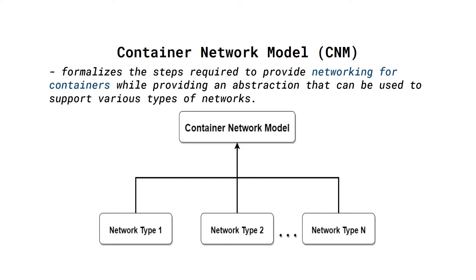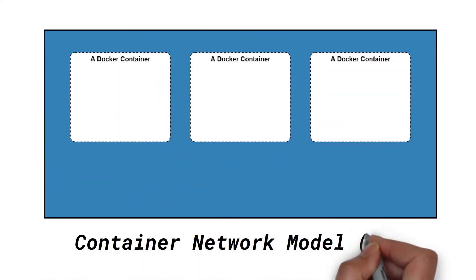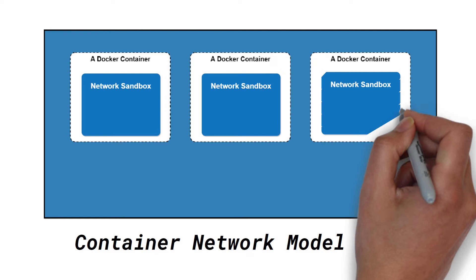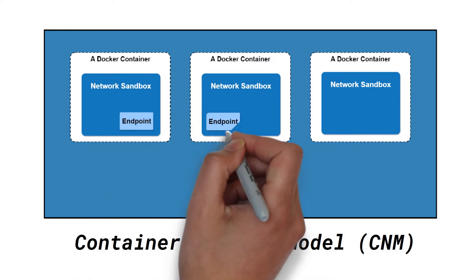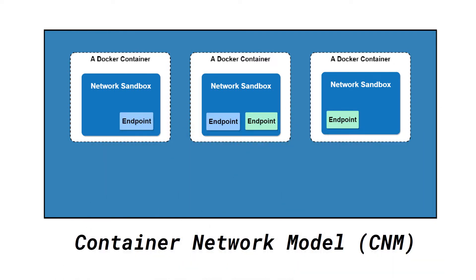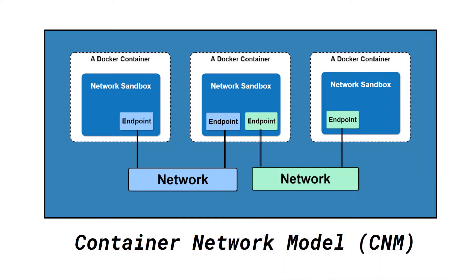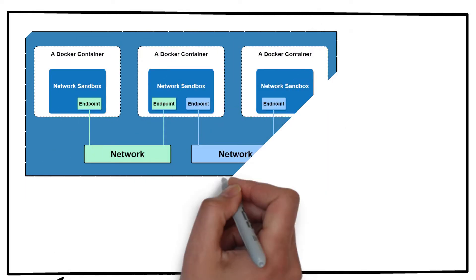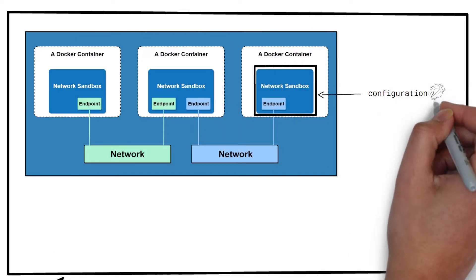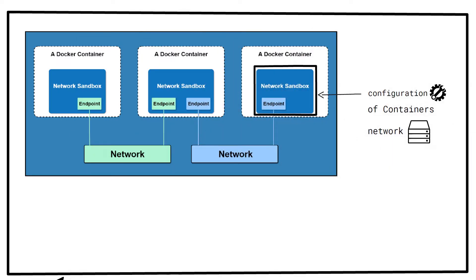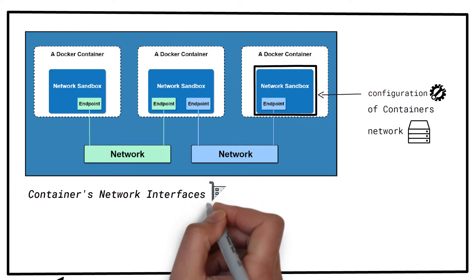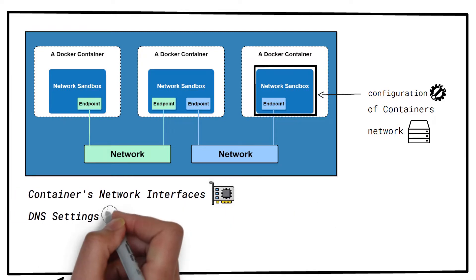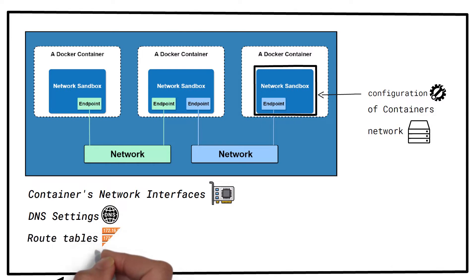CNM has three main components: Sandbox, Endpoint, and Network. A sandbox contains the configuration of the container's network stack — this means management of the container's network interfaces, its DNS settings, route tables, etc.